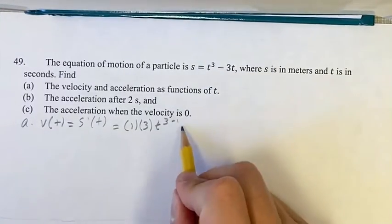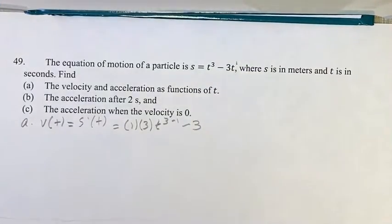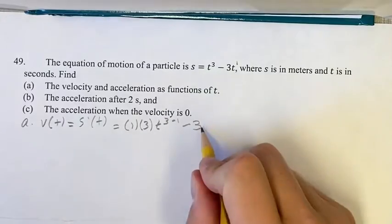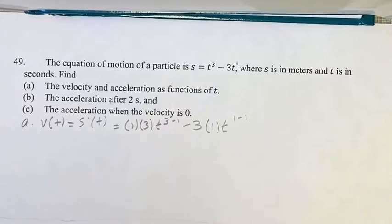Over here, our coefficient is minus 3. Think of that as t being t to the 1. So you bring down the exponent, which is just 1, and then subtract 1 from the exponent to get the new exponent.